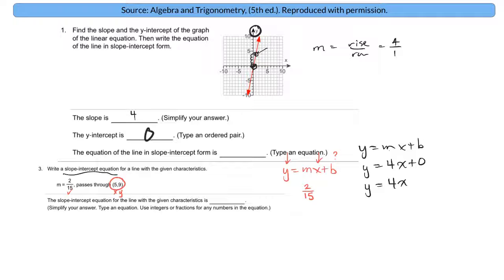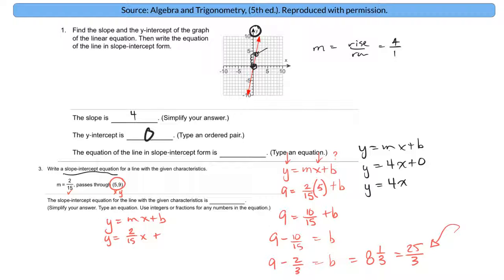So the y is 9 equals 2 fifteenths times the x is 5 plus b. Now I just solve for b. So if I multiply this, this would be 10 over 15 plus b. I'll subtract that on each side. And then 9 minus 10 fifteenths - I think 10 over 15 is the same as 2 thirds. And if you subtract those, I think you get 8 and one third. If you convert that, I think that's 25 over 3 as well. So that's what my y-intercept is.